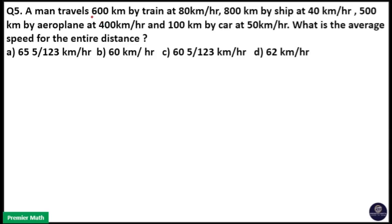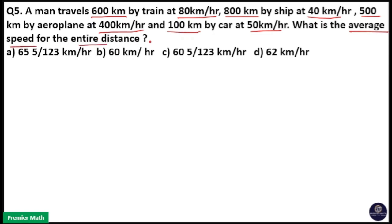Number five. A man travels 600 km by train at 80 km per hour, 800 km by ship at 40 km per hour, 500 km by aeroplane at 400 km per hour, and 100 km by car at 50 km per hour. What is the average speed for the entire distance?